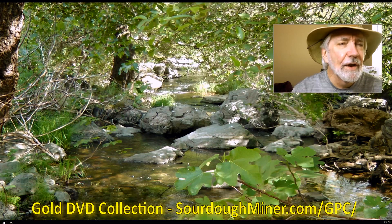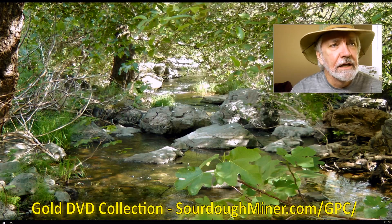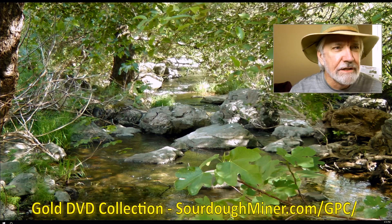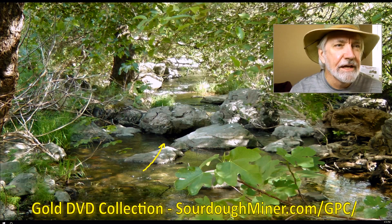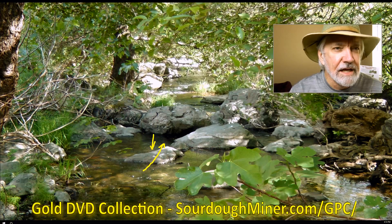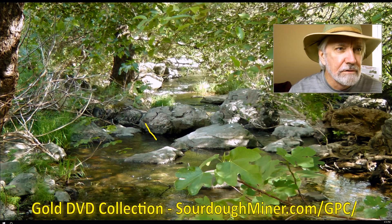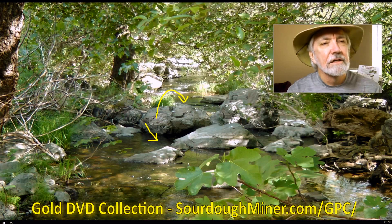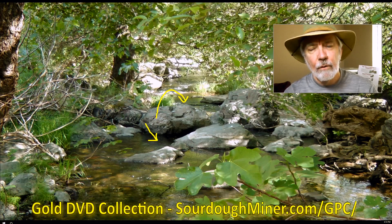Right now we're looking at boulders and cobbles in a stream bed. Notice this one has a kind of slope on the front edge, then it goes up like a ski slope and shoots off the back end and abruptly goes down behind it. There are others like this one right here that have an abrupt curve that kind of goes backwards — a curve underneath in the front, then it pops over the top and goes down the back side. Let's talk about each of those boulder shapes.